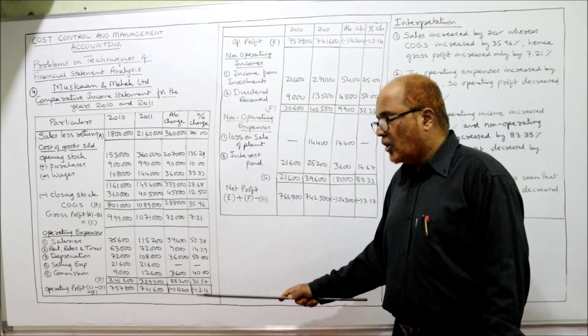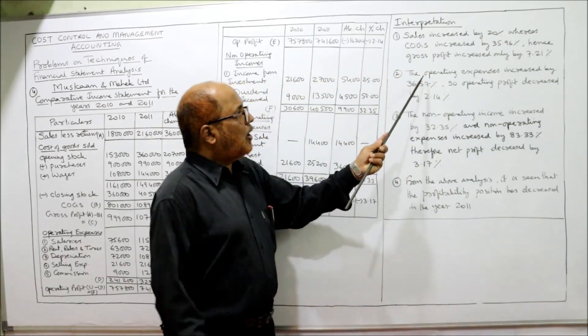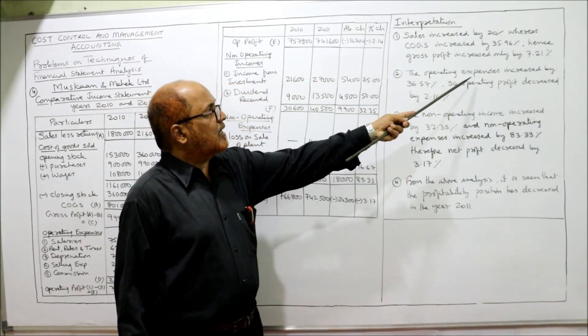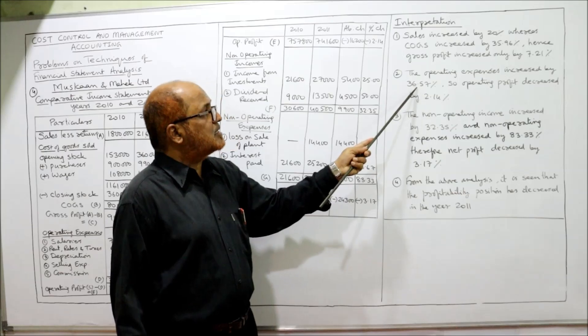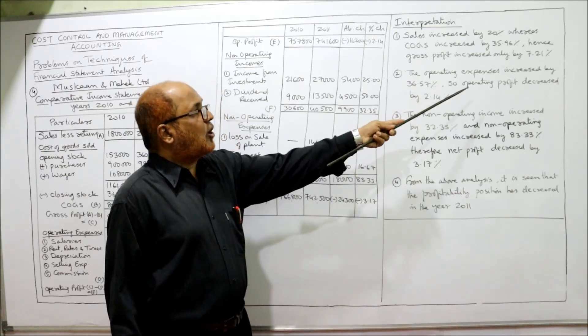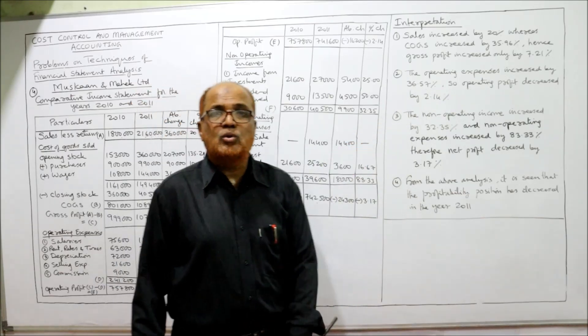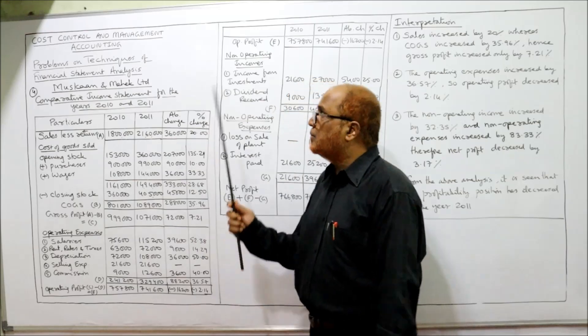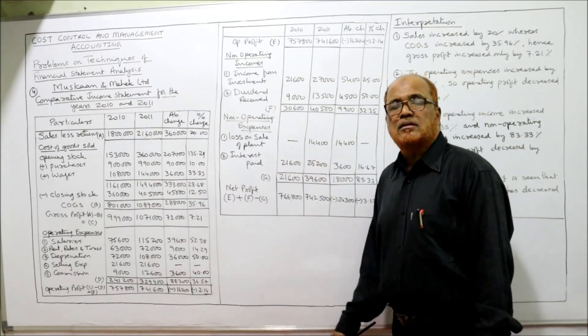Second interpretation: operating expenses increased by 36.57%, so operating profit decreased by 2.14%.